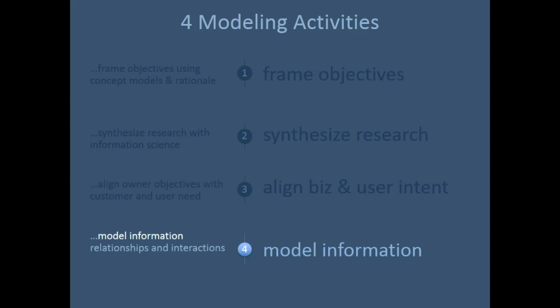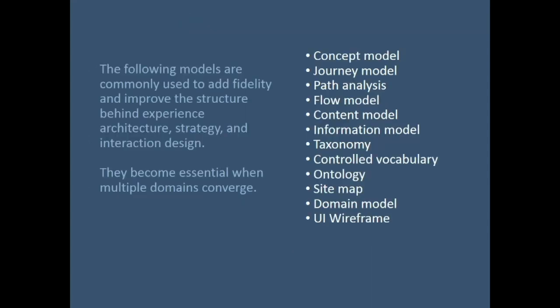The last activity is more detailed and granular: modeling the relationships and the information. From conversations with users you get the intent, you get the task analysis, you get the flows, and you understand what the needs are — then you start modeling the information at that level. As you move from a junior to senior practitioner, you will likely come across every single one of these, and in more complex environments you will be using all of them.